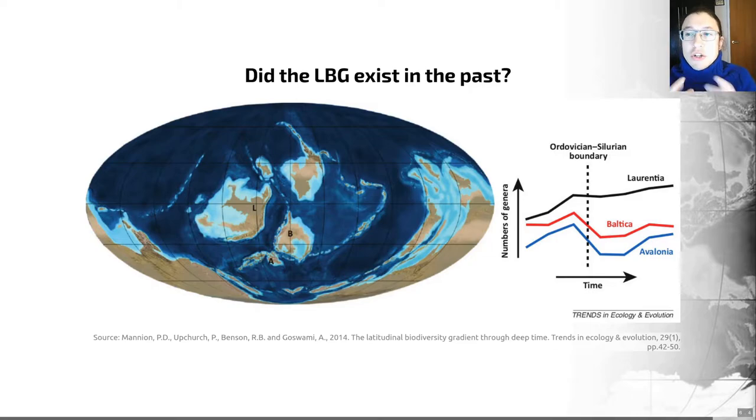It shows this measure of diversity for three paleo-continents called Avalonia, Baltica, and Laurentia, marked by the A, the B, and the L on this map. And what this shows us is that diversity before and after the late Ordovician mass extinction event—this is an event when approximately 85% of marine species went extinct during a transition from a greenhouse to an ice house world—shifted at this point.